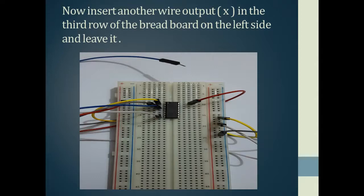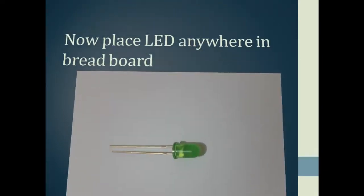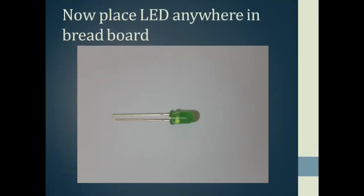Now taking a connection from the output pin and leaving the other side free for now. The LED is going to be used for verification purposes. One should know that in an LED, the long leg is positive and the short leg is negative. Moreover, there is a slight flat cut on the LED — the side with the cut represents the negative side.